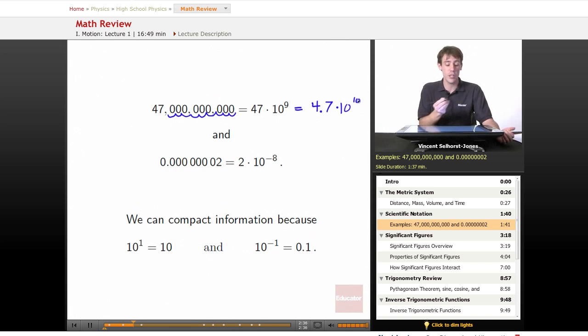Same idea for small numbers. We go back 1, 2, 3, 4, 5, 6, 7, 8 spaces, so 0.0000002 would be 2 × 10⁻⁸. We can compact information this way because 10¹ = 10, 10² = 100, and so on. We can also go smaller: 10⁻¹ = 0.1, 10⁻² = 0.01. This allows us to slide digits around so we don't have to write really long numbers. When dealing with the number of atoms, the charge of an electron, or the distance to the sun, we deal with very large and very small numbers. Physics deals with extreme values, and we don't want to get cramps writing 30 zeros every time.